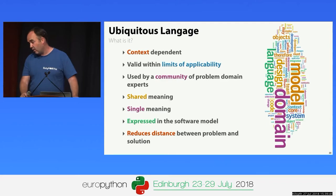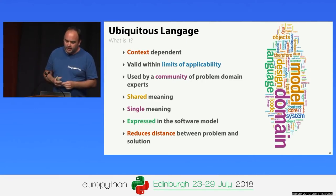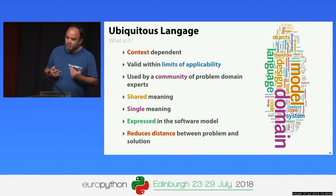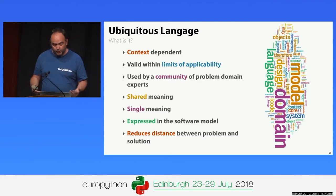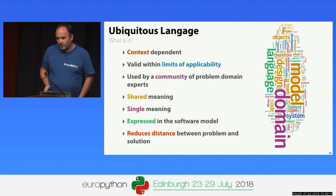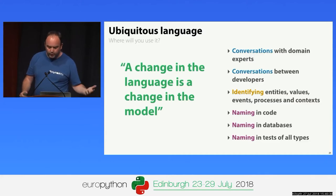The ubiquitous language is context-dependent. If you're doing fighter aircraft avionics, that's going to have a very different language to sending out utility bills. A ubiquitous language is valid within a context — within a limit of applicability — and that is called the bounded context. It's used by a community of domain experts, has shared meaning, is unambiguous, and has a single meaning. Crucially, the language is expressed in the software model — we use those words when writing software — which helps reduce the distance between the problem domain and the solution domain.